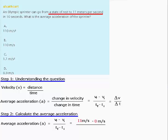We're also told that the Olympic sprinter does all of this within 10 seconds. That is, the time that it takes the Olympic sprinter to increase his or her speed from 0 to 11 meters per second takes 10 seconds. Therefore, the difference between the final time and the initial time is 10 seconds.